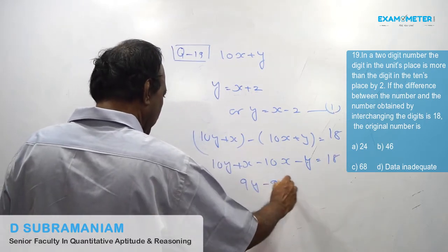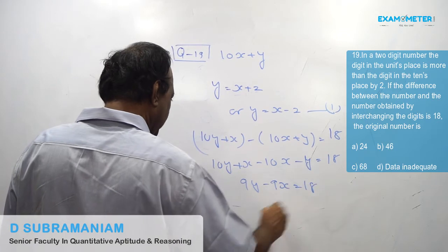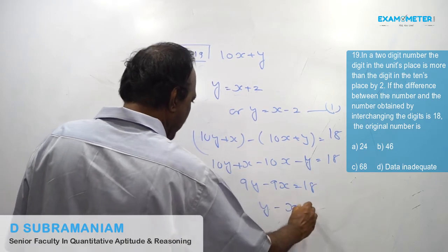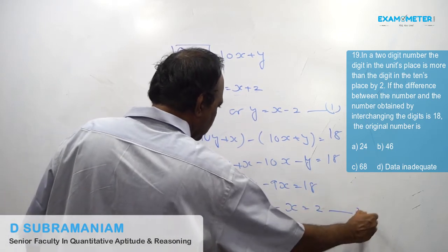This gives 9y − 9x = 80, so y − x = 2. But wait — 80 is not divisible by 9.